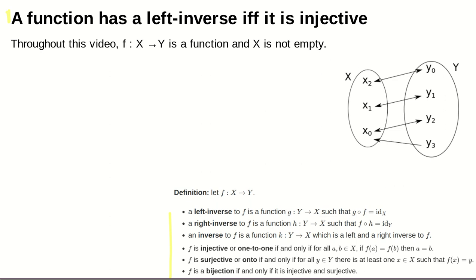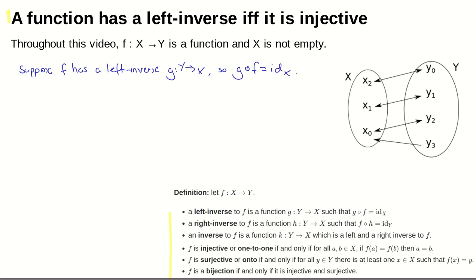Let's suppose first of all that f has a left inverse. That would be a function g from Y to X with the property that g composed with f is the identity on X. In this case we have to argue that f must be injective. We need to take two elements a and b of X, suppose that f(a) equals f(b), and prove that a must equal b.